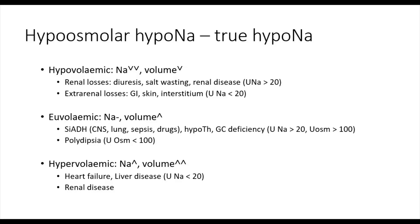The reduced effective volume in the intravascular space leads to hyperactivation of the renin-angiotensin-aldosterone system. The RAS system is also hyperactivated in heart failure because reduced cardiac output leads to reduced renal perfusion, and in liver failure, where accumulation of intravascular volume in the splanchnic circulation reduces volume in the rest of the systemic circulation, again reducing renal perfusion. In all these cases, the hyperactivated RAS system leads to sodium reabsorption at the level of the nephrons and a urine sodium of less than 20 millimoles per liter.